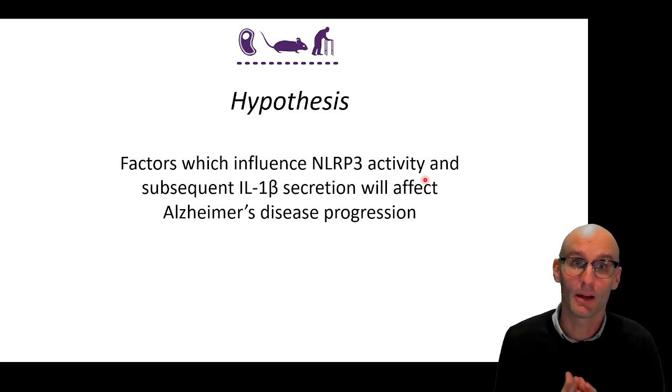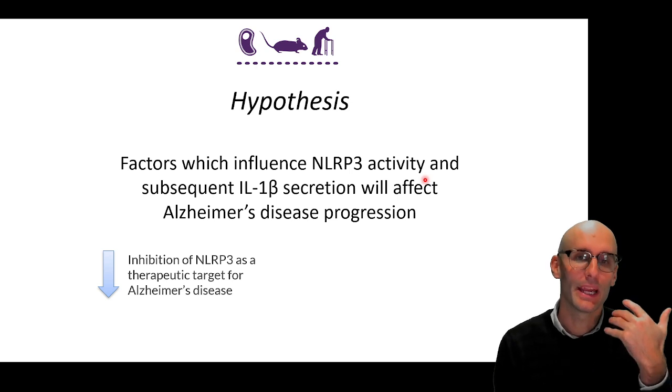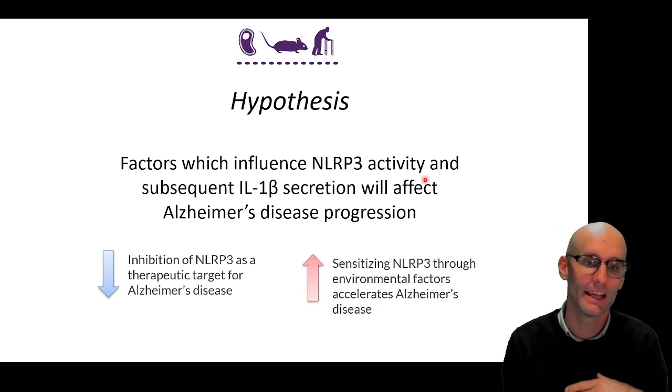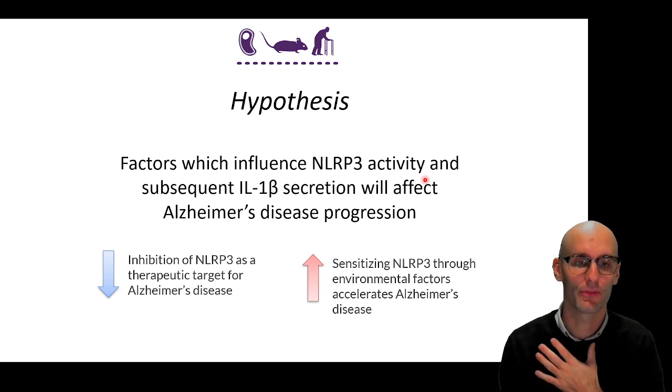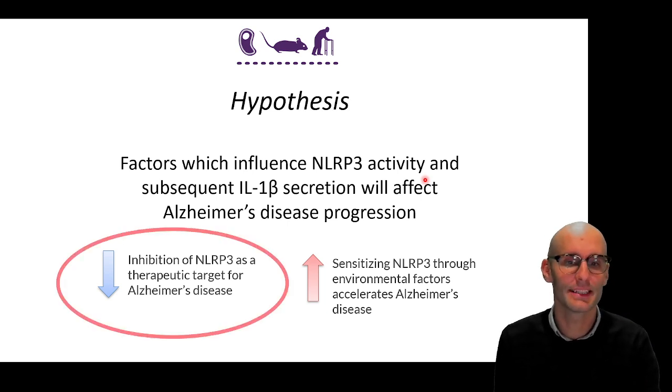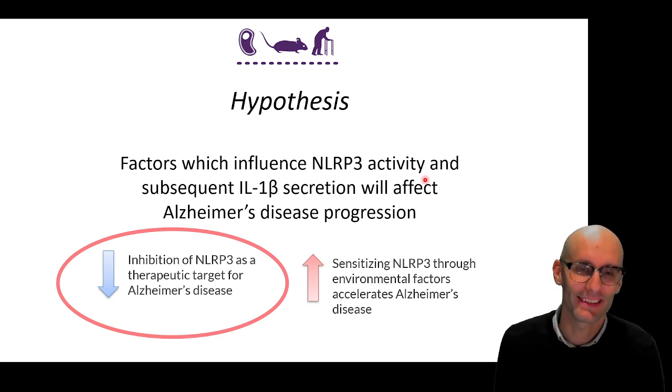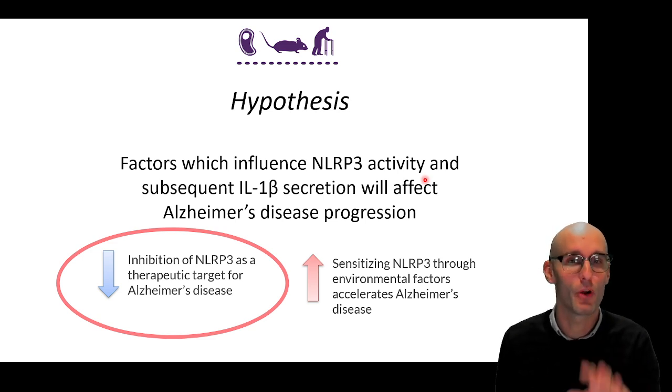Now, for about five years of my life, I researched this from a couple of different angles. One was, can we inhibit NLRP3 as a therapeutic target for Alzheimer's disease, and are there environmental factors that can sensitize NLRP3 that accelerates Alzheimer's disease? Now, this paper that I did with Michael Daniels, and David Brough, and Catherine Lawrence, and a number of other collaborators, really focused on this hypothesis. Can we inhibit NLRP3 as a therapy for Alzheimer's disease? And this is what I'm going to jump into over the next few videos.